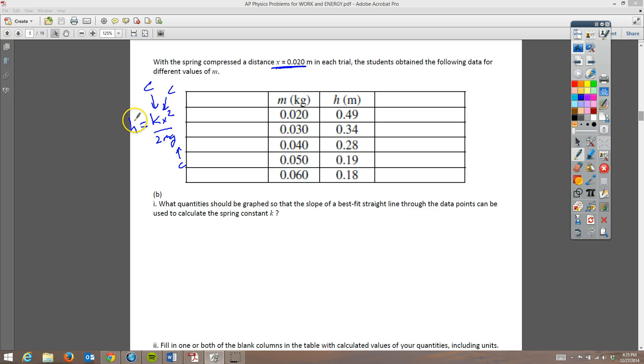And they want us to know what quantity should be graphed. And so what we're going to do here is let's just say we want to plot H versus, and then if we get rid of the K, the X squared, the 2, and the G, notice that that's H is proportional to 1 over M. And so that should give us a straight line. So what we're going to do here is we're going to say 1 over M versus H. And those are the two things that will give us that straight line.